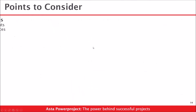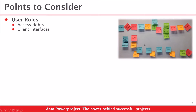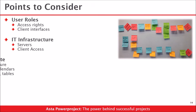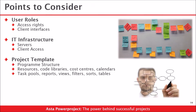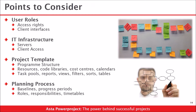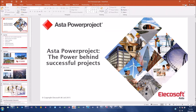Areas to consider include access rights - you can control what people see and how much access they have. The infrastructure is a client-server application with Asta Power Project installed on your machine and the enterprise server stored centrally. This also means you can have project templates, centrally controlled program structures, resource code libraries, cost calendars, and task pools all shared across the system, and you can centralize and standardize baselining and progressing processes with roles and responsibilities.